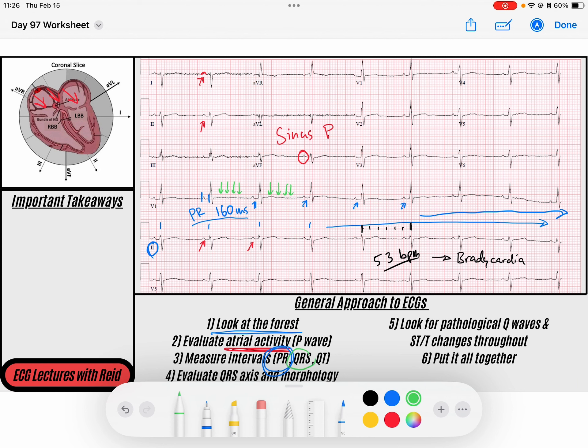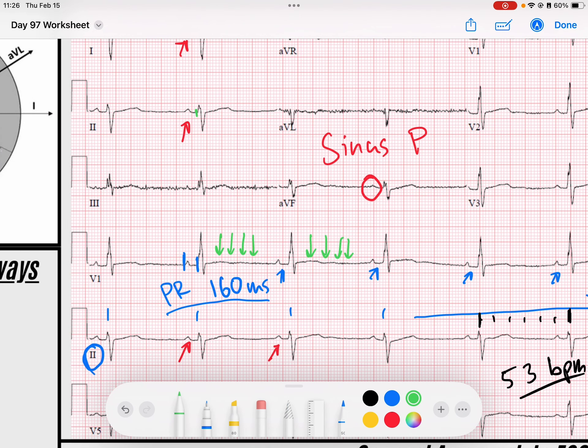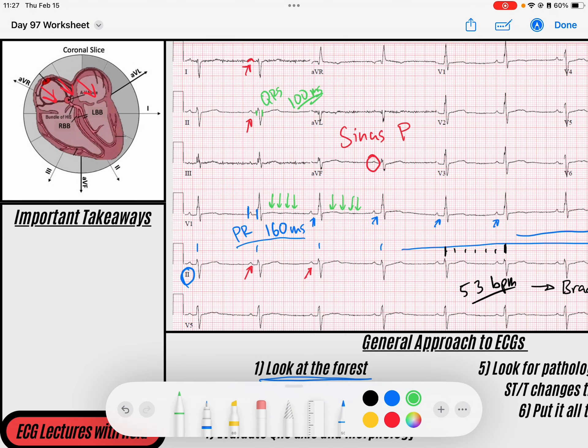Next thing I'm going to do is evaluate my QRS complex. We said it was right on the border of narrow. If I measured the width here, it looks to be about two and a half small boxes maybe. So my QRS duration seems to be maybe 100 milliseconds, which is normal. My QRS is negative in lead one and appears to be about isoelectric in AVF. So what does that mean? If it's isoelectric in AVF, that means my QRS axis is perpendicular to that. And the fact that it's negative in lead one tells me it's going away from lead one, so my axis is deviated to the right.